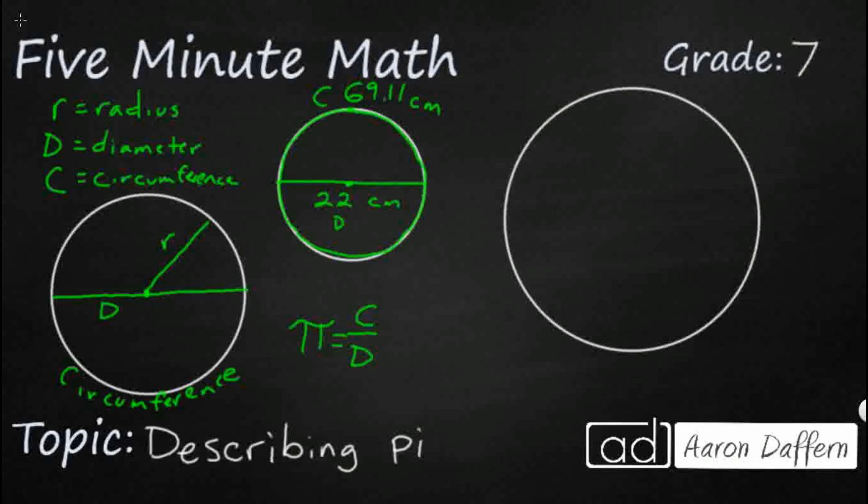So if we look at that ratio here, pi is going to be, now it's approximately 69.11 over 22, which is approximately 3.14. So when we're looking at our ratio here of pi, it's going to be approximately, that's why I've got the squiggly lines there, 3.14.